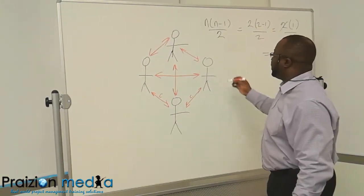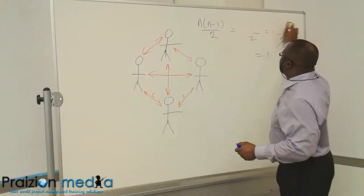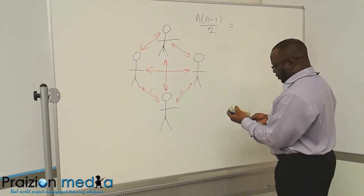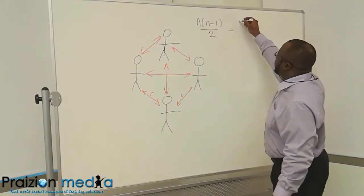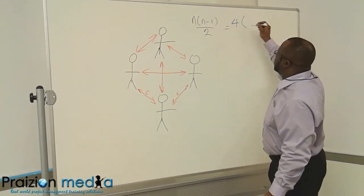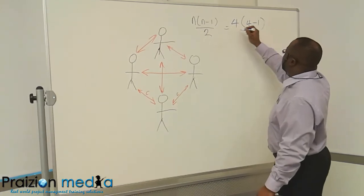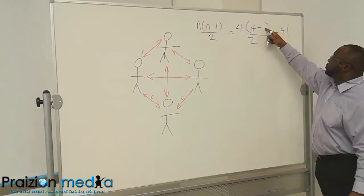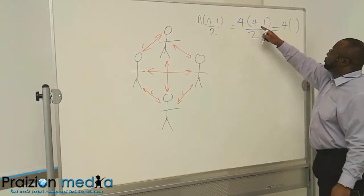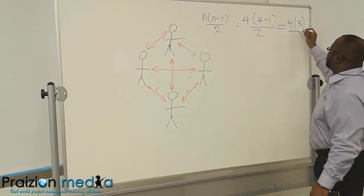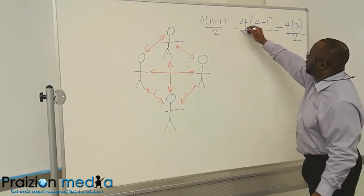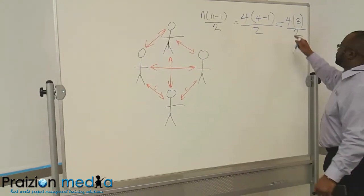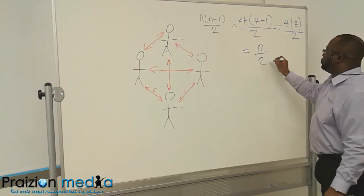So if you apply the formula again, N is going to be 4 times 4 minus 1 divided by 2. And this would be 4 times what? 4 minus 1 is 3, and all of that divided by 2. It's the whole thing divided by 2. So that's going to be 12 divided by 2, which is 6.